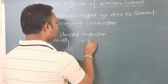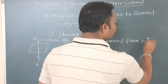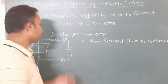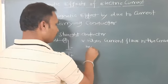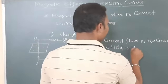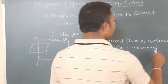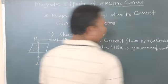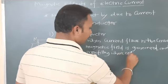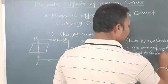The first point: when current flows in the circuit, a magnetic field is generated. Once the magnetic field is generated, the iron filings get arranged in concentric circles.